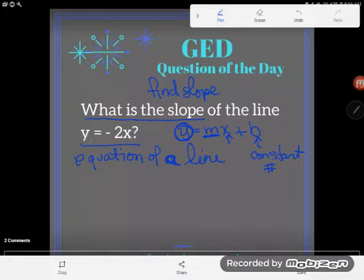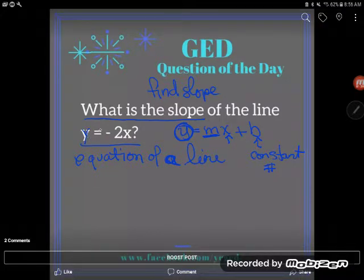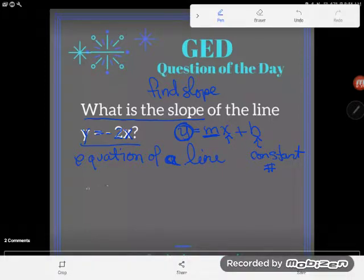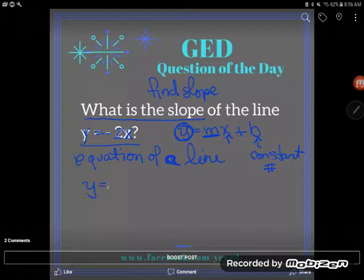Students tell me all the time, Kate, this is not in that form, because look, here's my y, they say. Okay, I see my y, and I see my equals, and I see my m, negative 2, and my x, but they say there's no b, there's no constant.